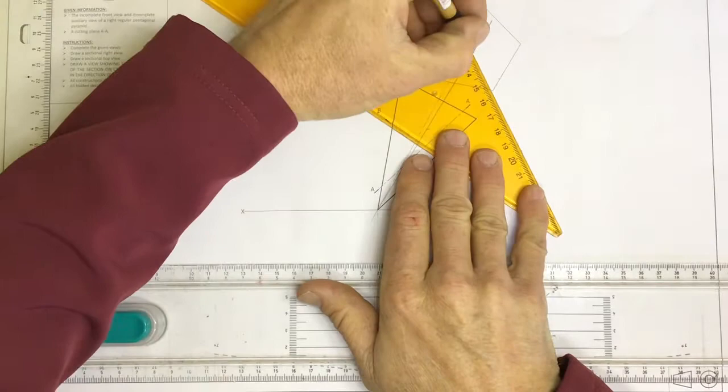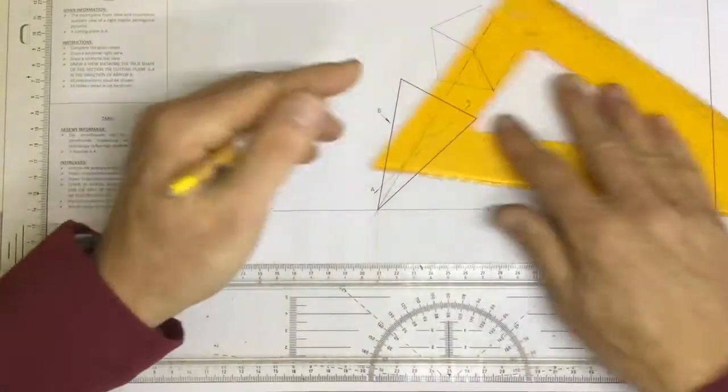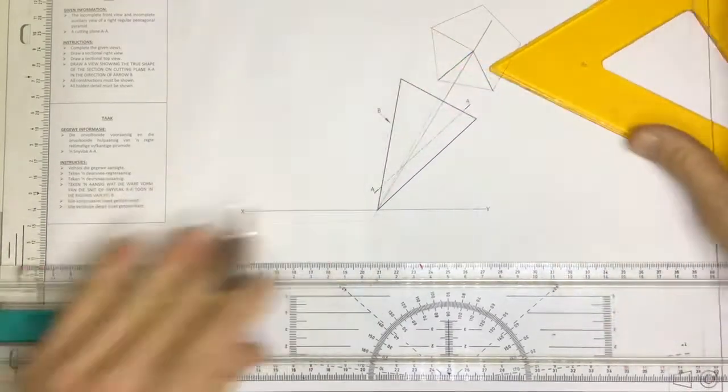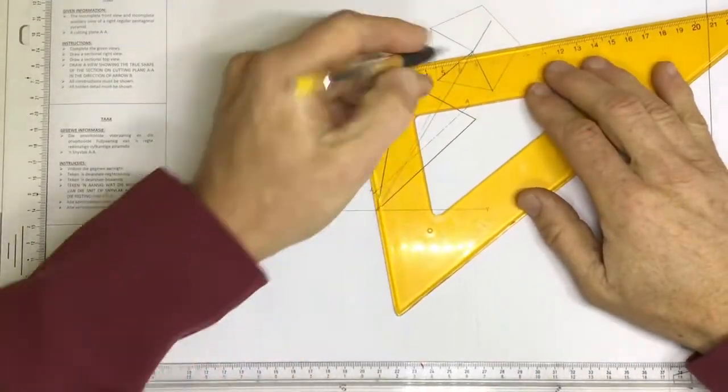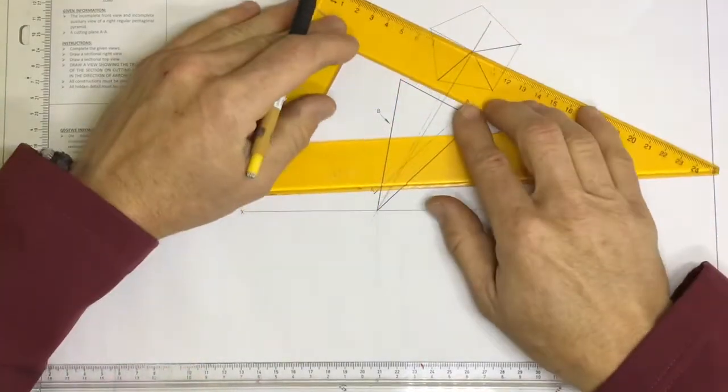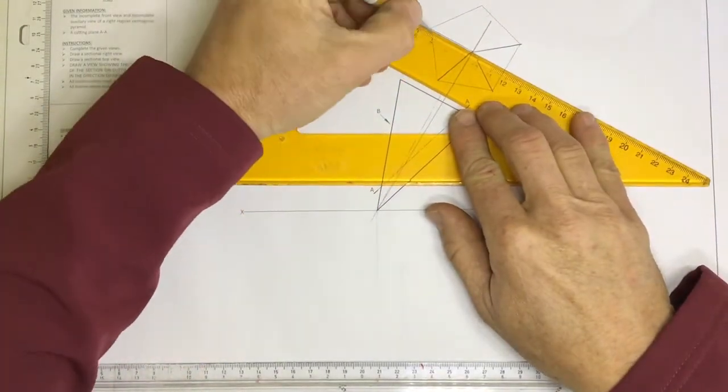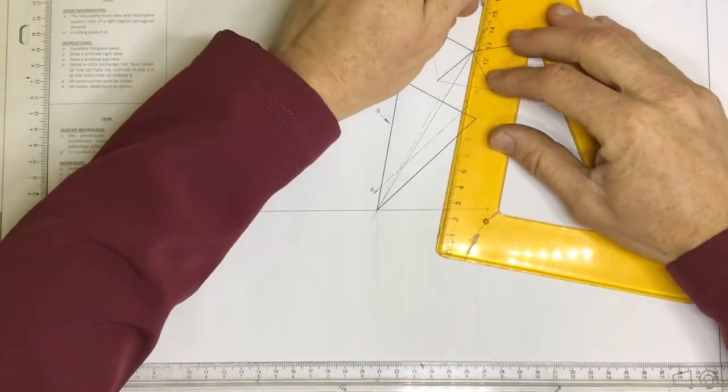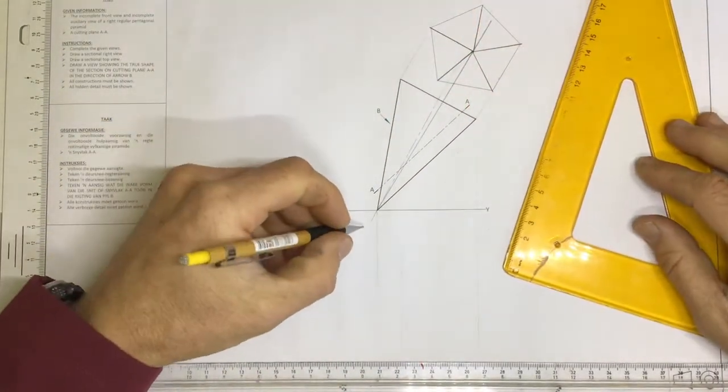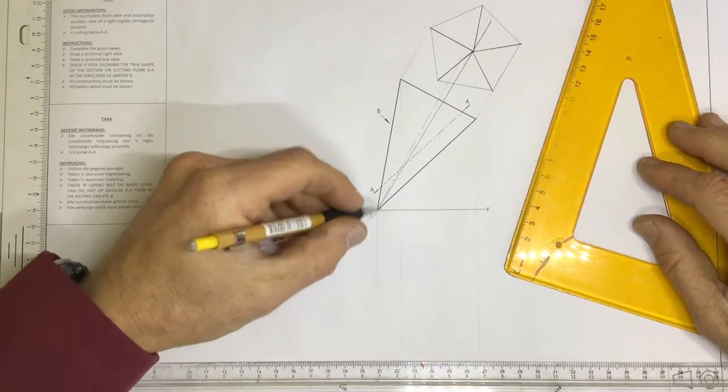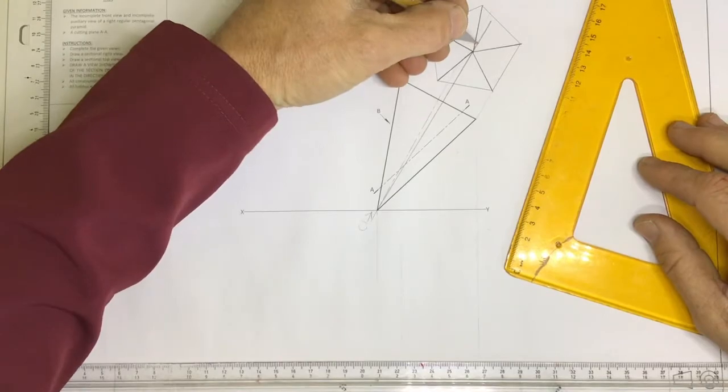And I can draw these lines in dark if I wanted to, because where am I standing when I'm looking at this thing? I'll show you now in two seconds, as soon as I've drawn these lines in dark. Where am I standing? In order to see this, I would be standing over here looking in that direction. Whatever I see, I draw on the opposite side of the axis.